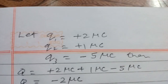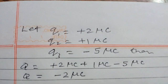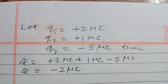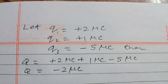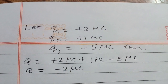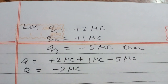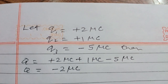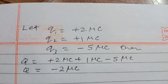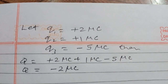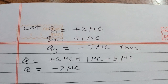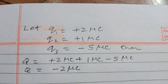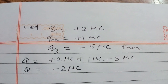For example, let q1 = +2 microcoulombs, q2 = +1 microcoulomb, and q3 = −5 microcoulombs. Then the total charge Q = (+2) + (+1) + (−5) = −2 microcoulombs, because 2 + 1 = 3, and 3 − 5 = −2.